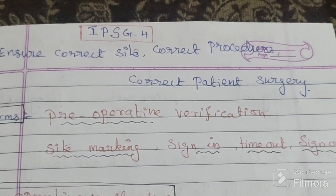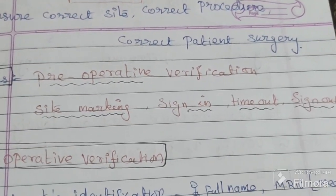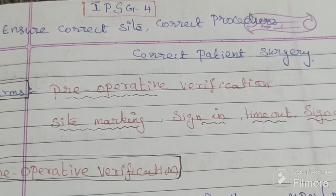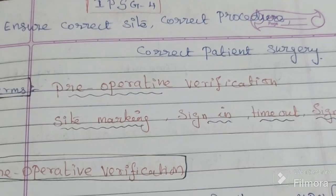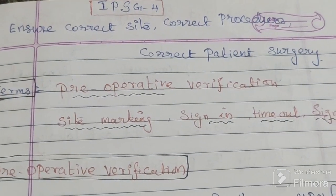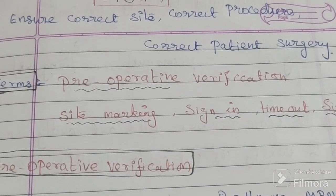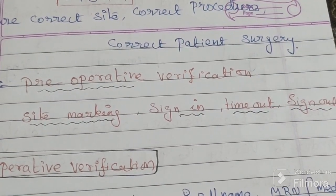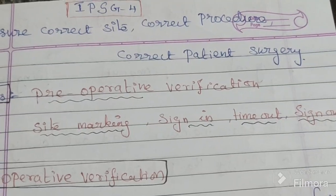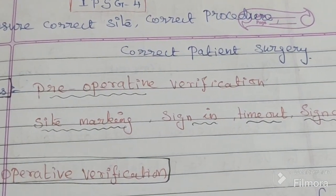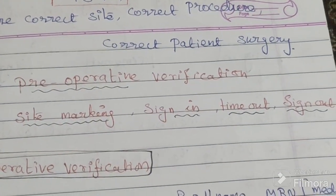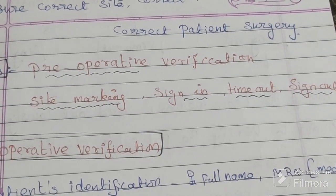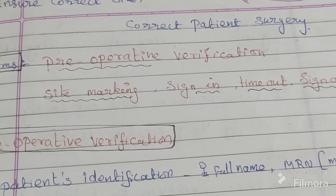There are certain terms to remember under IPSG 4. These terms are: pre-operative verification, site marking, sign in, time out, and sign out. Let's discuss each one in detail.